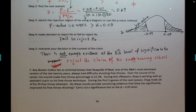During this offseason, Shaq is working with an assistant coach on his free throw technique. During the first five games of the next season, Shaq made 26 of his 39 free throw attempts. Do these results provide convincing evidence that Shaq has significantly improved his free throw shooting? Carry out a significance test at alpha = 0.05.